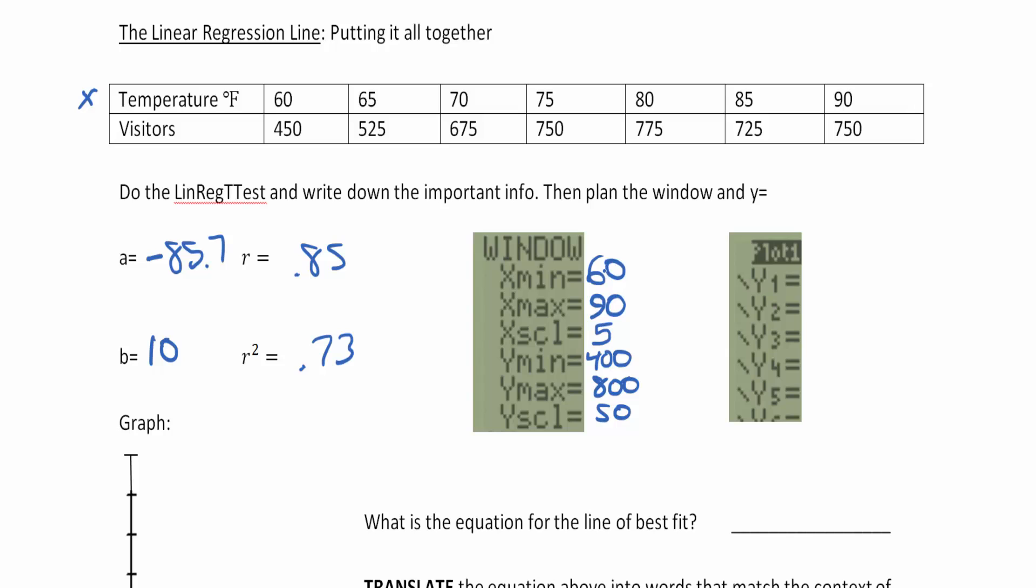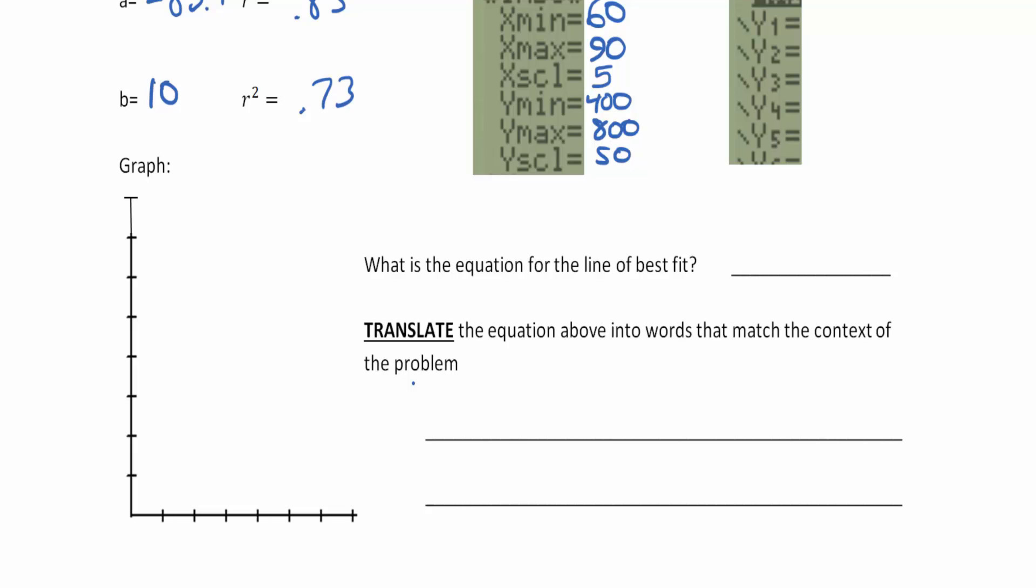You could have went lower than 60 if you wanted to, or higher, to basically encapsulate everything that's there. It's kind of nice to mark our x and y axis right now. This is 60, and if I'm going by fives, I can go 60, 70, 80, and 90.